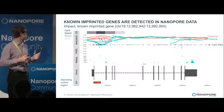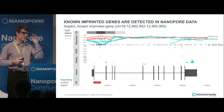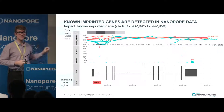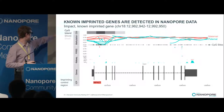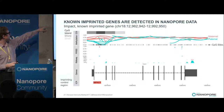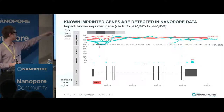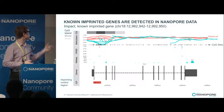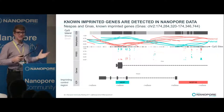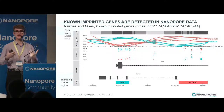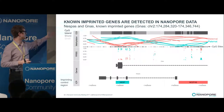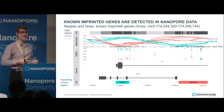On to results. We have known imprinted genes within the mouse genome — a few dozen of them. Here's one example: Impact. We have the nanopore methylation up top, with vertical bars showing the location of CpG sites where we have information. Then reduced representation bisulfite, haplotyped RNA-seq, and the imprinting control region below. You get a beautiful separation between the red maternal reads and the blue paternal reads at that imprinting control region. Another example — my favourite — Nespas and Gnas, two imprinted genes next to each other. Again, beautiful separation between reads in both nanopore and bisulfite, confirming our method is doing what we'd like.